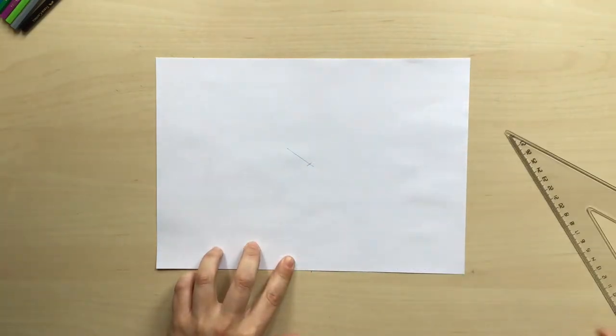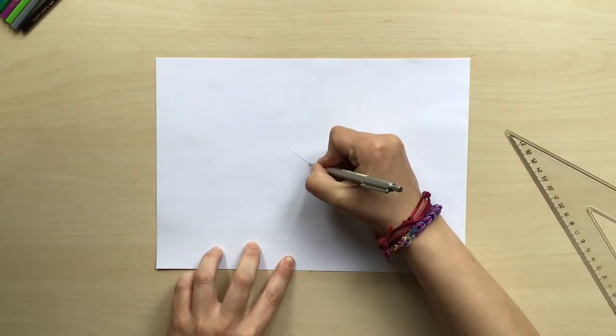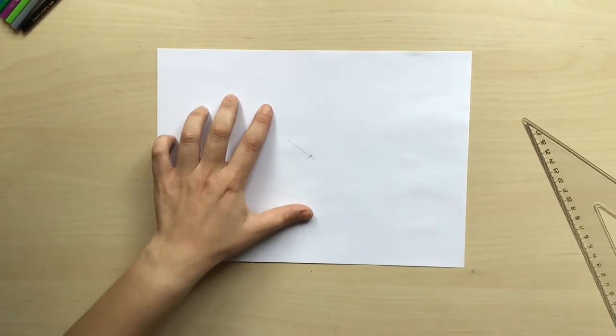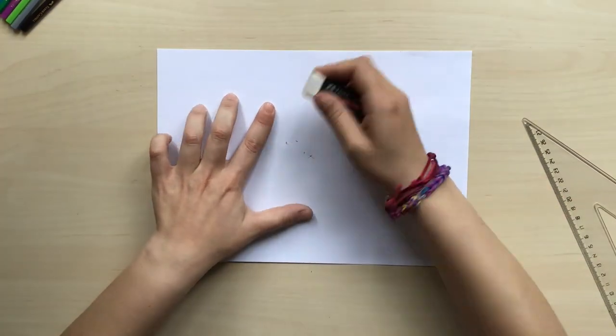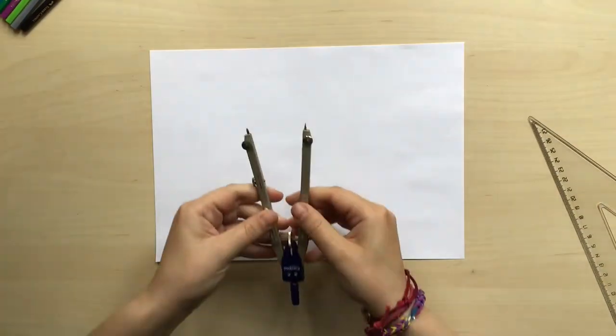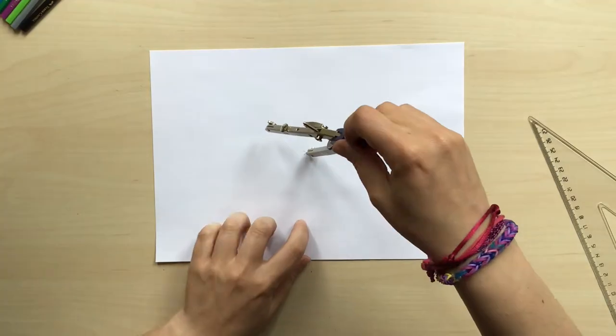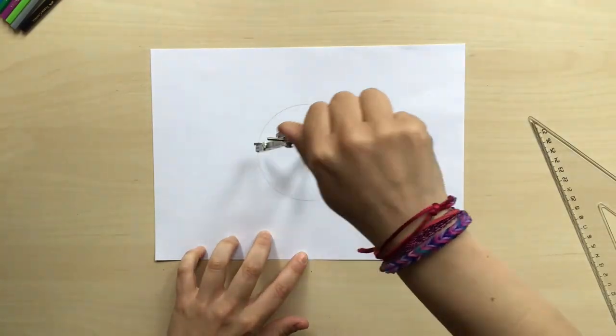The place where those two lines meet is going to be pretty much the middle of my paper, and that is where we're going to place the needle of our compass and draw a circle. You can use any size you want.